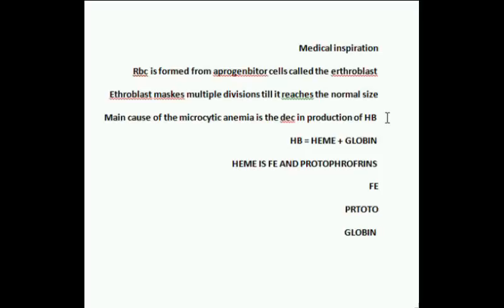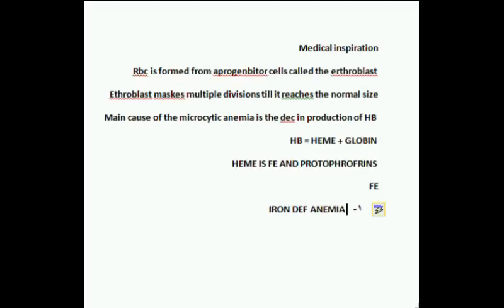A decrease in iron, protoporphyrin, or globin will cause an overall decrease in hemoglobin. Regarding iron: it can be decreased in a disease called iron deficiency anemia. Number two, we can face a disease called anemia of chronic disease, where chronic inflammation causes iron to be stored in the macrophages.